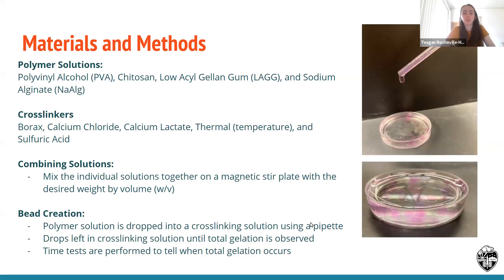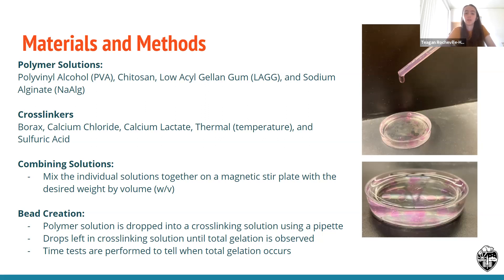To begin the bead making process, we needed to make the different polymer solutions. The four types of polymers we used were PVA, chitosan, low acyl gellan gum, and sodium alginate. The basic process for PVA, chitosan, and low acyl gellan gum is to measure the desired amount of water into a beaker on a magnetic stir plate, heat the water to the necessary temperature for each polymer, and slowly incorporate the polymer into the water. For sodium alginate, the water and polymer are blended together using an electric mixer. By themselves the solutions would not form gel beads, so crosslinking solutions also had to be made. The crosslinking solutions made were borax, calcium chloride, calcium lactate, sulfuric acid, and thermal crosslinking via temperature. Many of these were made by slowly adding crosslinker into continuously mixed water.